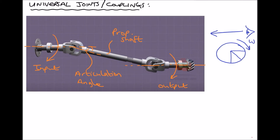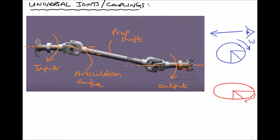If we were to imagine looking at the prop shaft, we wouldn't see a circular shaft. Because the shaft is angled downwards, what we would actually see is an ellipse — and the greater the articulation angle, the narrower that ellipse would appear. By drawing that sketch it should be evident that the angular velocity moving from 0 to 45 degrees is going to be different from the angular velocity moving from 45 to 90 degrees. The reason is that the distance travelled in each case is different, so the angular velocity is not constant.